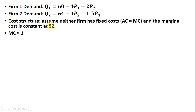We're going to assume that neither firm has fixed cost, so average cost equals marginal cost. And we're going to assume that each firm has a marginal cost of production that is constant at $2, so MC equals 2, or MC equals AC equals 2.